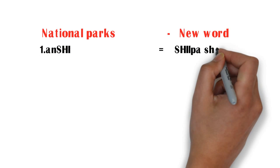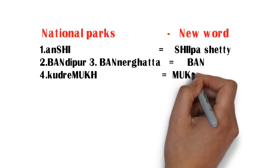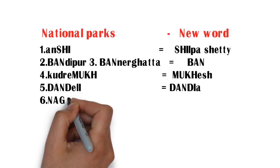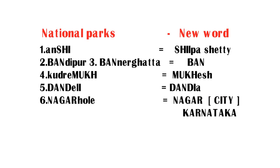Let us see what they are. First, Anshi National Park. Second, Bandipur National Park. Third, Bannergatta National Park. Fourth, Kudrimukh National Park. Fifth, Dandeli National Park. Sixth, Nagarhole National Park. In this way, Karnataka has a total of six national parks. But how do we remember all six names? Let us see the trick.